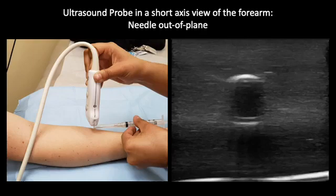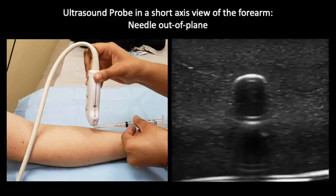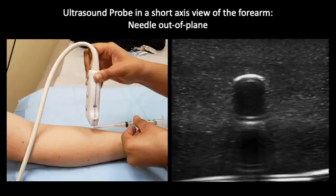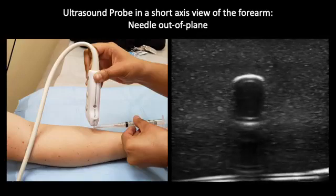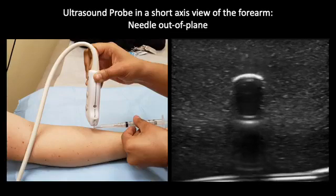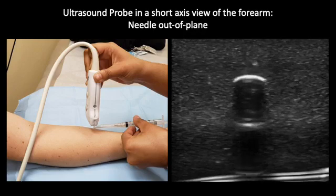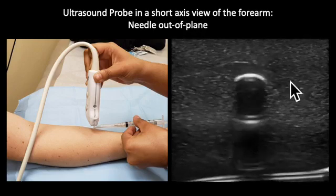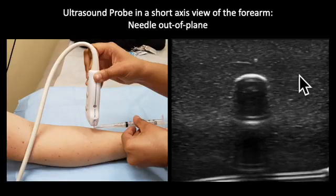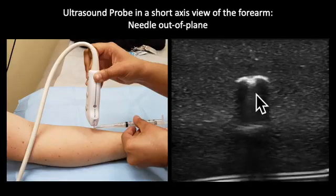In the picture on the left, the ultrasound probe is in a short axis view with the needle out-of-plane. In the video on the right we can again see a simulated anatomical structure in the short axis view. We can see the tip of the needle come into view in the center of the video. Notice how just the tip is visible in the out-of-plane technique and not the entire shaft of the needle. Again, notice the needle going in and out of the vessel, taking careful note about how this appears on ultrasound.